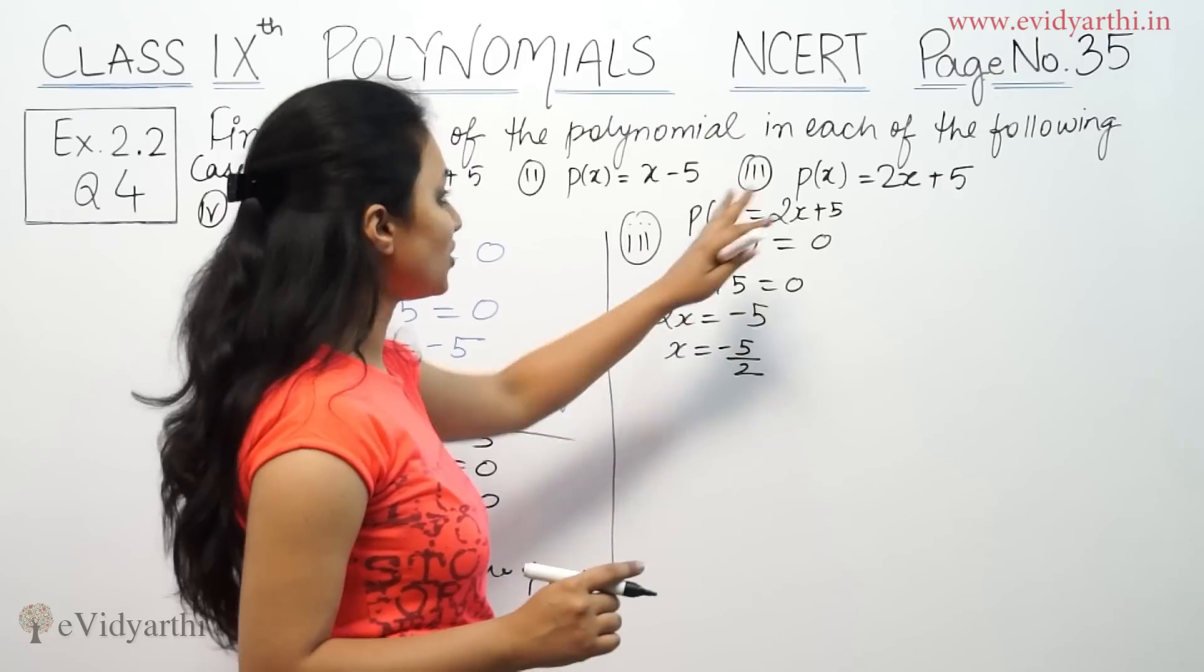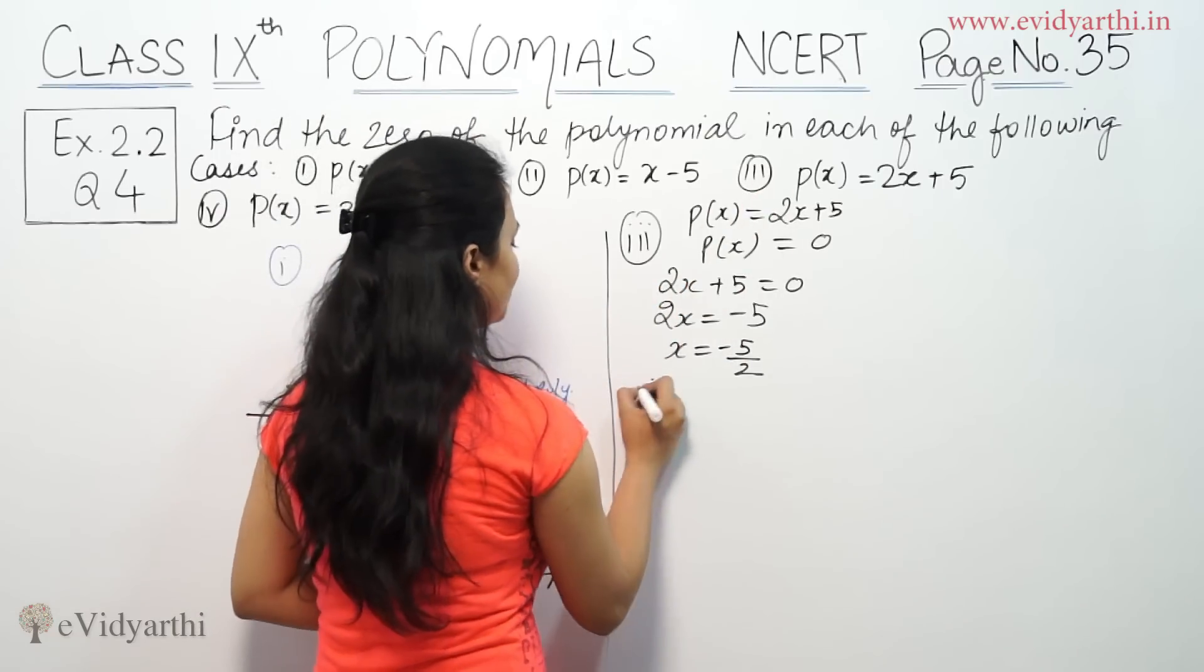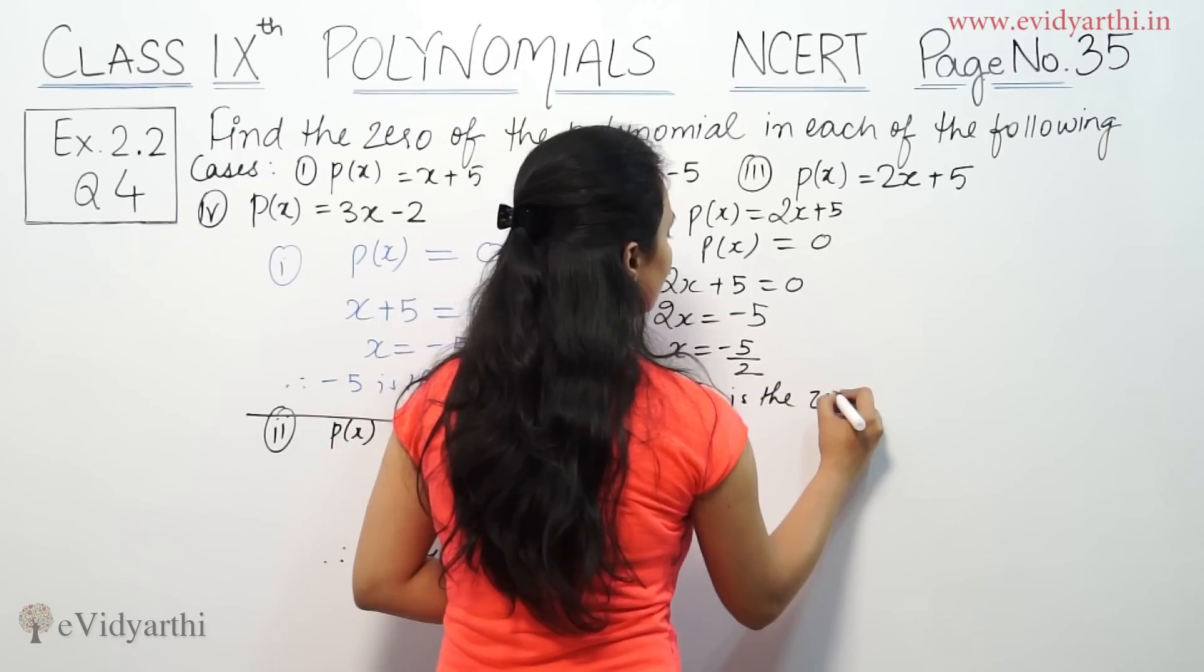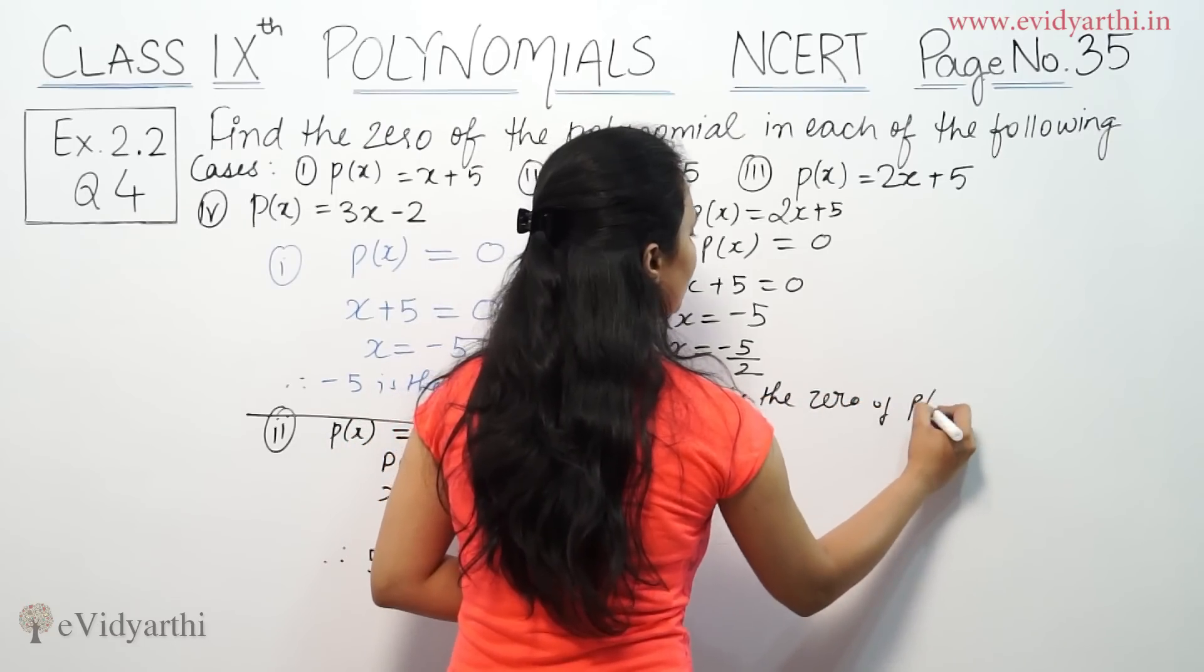So, minus 5 by 2 is the zero of this polynomial. Minus 5 by 2 is the zero of p(x).